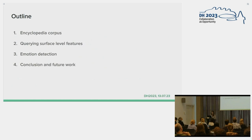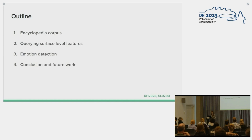For the remainder of my talk, I first would like to go into the corpus we used — the encyclopedia corpus — then our two experiments, which are querying surface level features and then emotion detection, and finally our conclusions and future work.